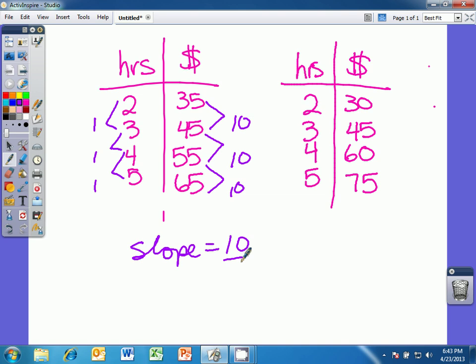In table 2, we have a constant change in the y, or the dependent variable, of 15, and a change in the x of 1. So the slope in table 2 is 15 over 1, change in y over change in x.